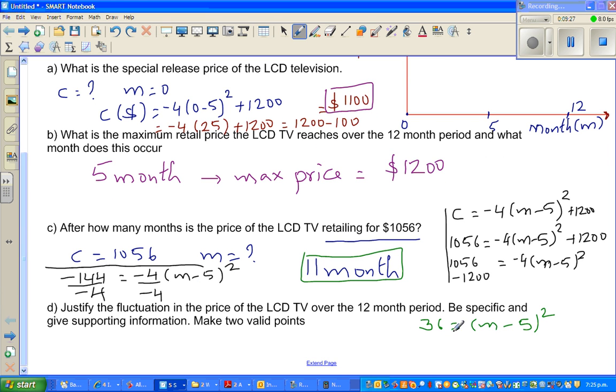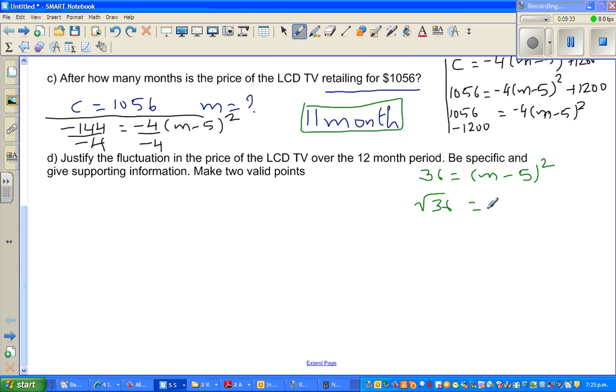So 36 equals M minus five squared. If you take square root of 36, square root of M minus five squared, this is M minus five. Square root of 36 is six. If you add five to both sides, six plus five equals M. M equals 11.